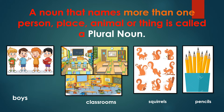Now children, let us see what a plural noun is. A noun that names more than one person, place, animal or thing is called a plural noun. That means you can count them — they are more than one.